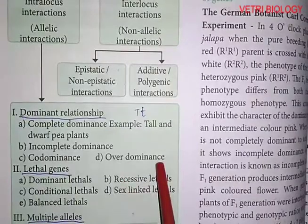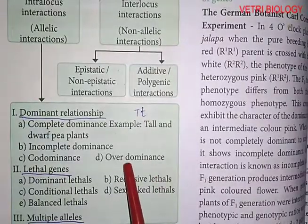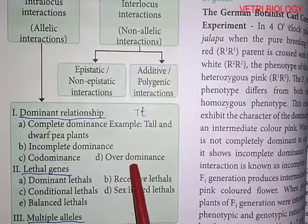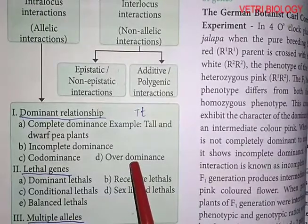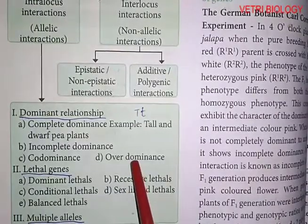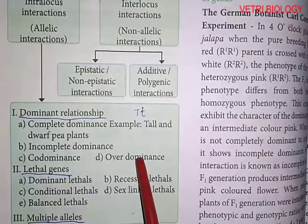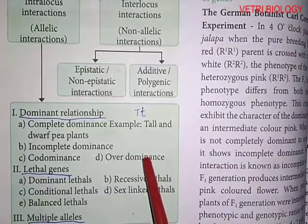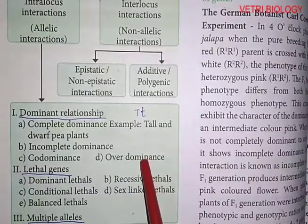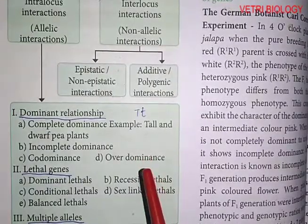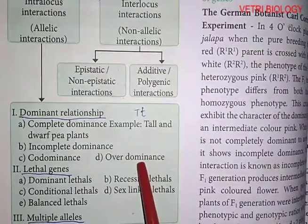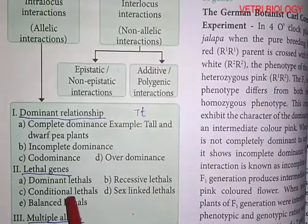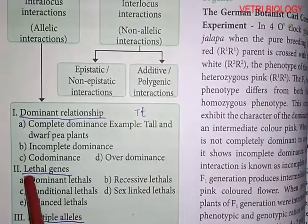Fourth: over dominance. It is a relationship between two versions of a gene, also called heterozygous advantage. The heterozygote's phenotype is at an extreme level beyond either parent's phenotype. Example: alleles of sickle cell anemia. Then: lethal genes.